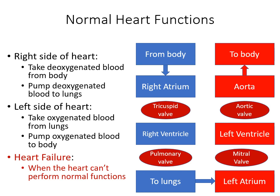The heart is a pump made up of cardiac muscle tissue. It can be divided into two sides: the right side and the left side. The right side accepts deoxygenated blood coming from the body and pumps it out to the lungs. The left side accepts oxygenated blood returning from the lungs and pumps it out to the entire body.